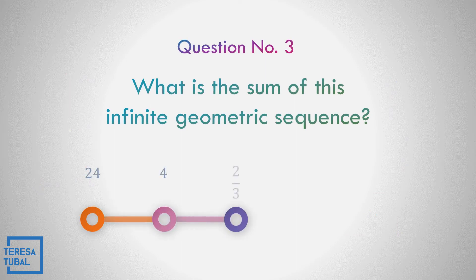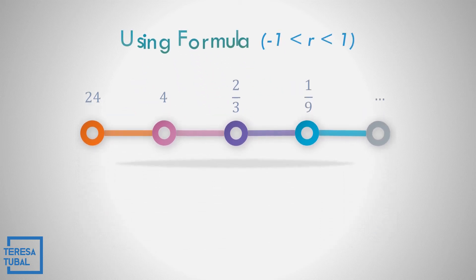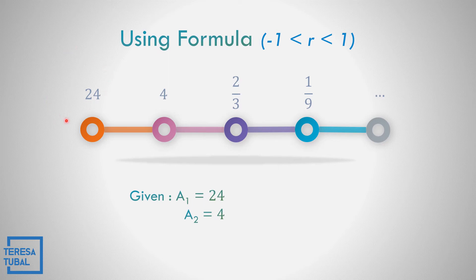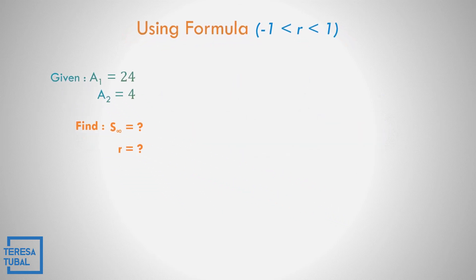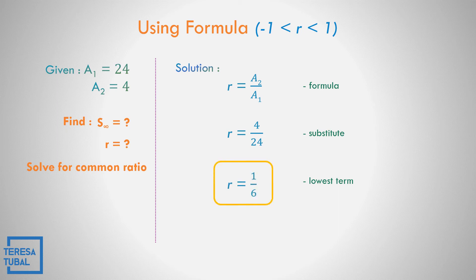So the sum of the infinite geometric sequence 24, 4, 2 thirds, 1 over 9, and continuing. The first term is 24, the second term is 4. Let us check if the common ratio is greater than negative 1 but less than 1. Let us solve the common ratio: second term divided by the first term, so 4 divided by 24. The lowest term, r, is equal to 1 over 6. This means that 1 over 6 is less than 1, so the sum exists.